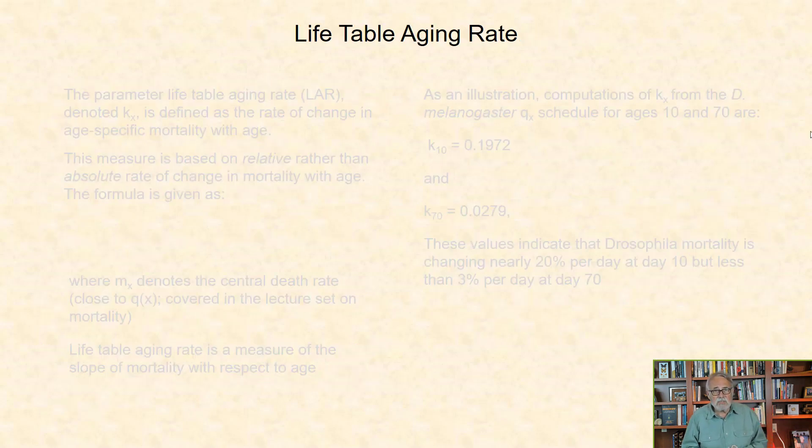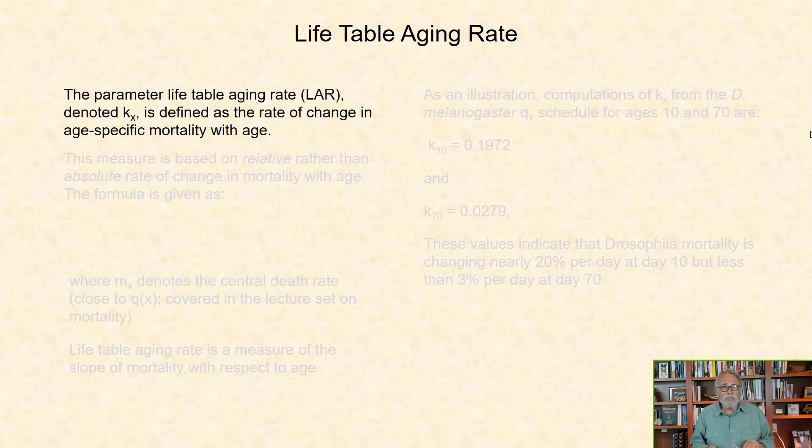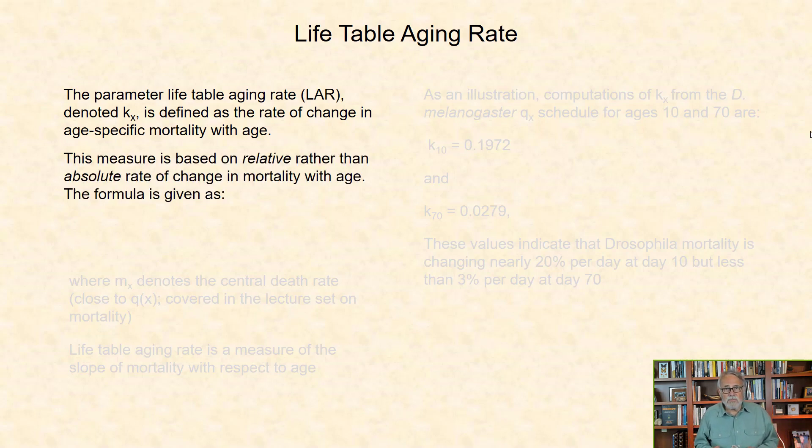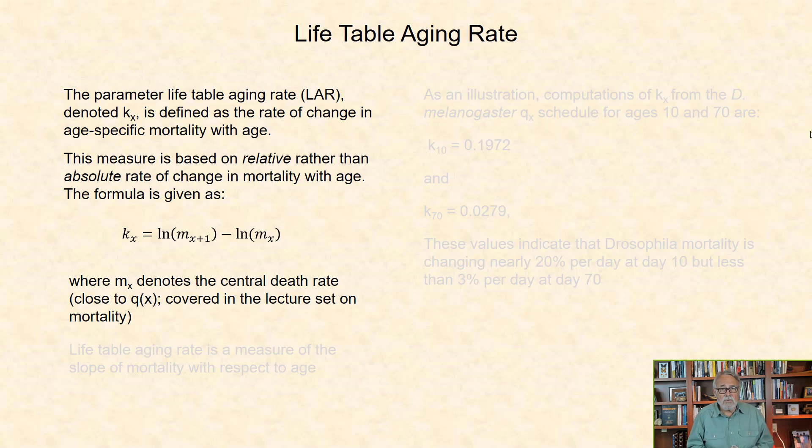The second metric is life table aging rate. The parameter life table aging rate, acronym LAR, denoted Kx, is defined as the rate of change in mortality at age x. This measure is based on relative rather than absolute rate of change in mortality with age. The formula is given as follows, where Mx denotes the central death rate, a metric closely related to Qx that I will cover in the next set of lectures on mortality.